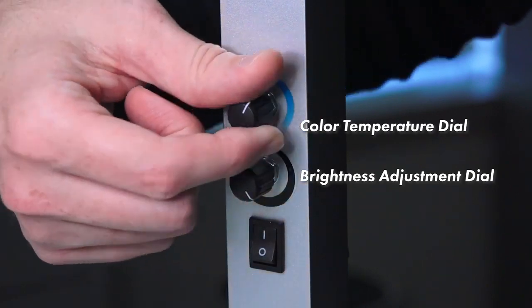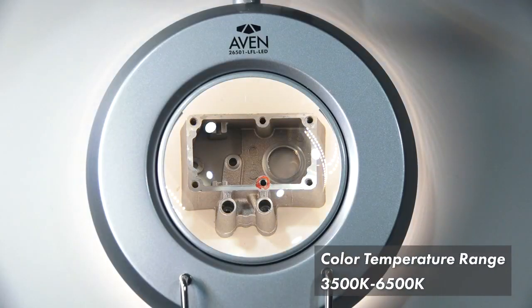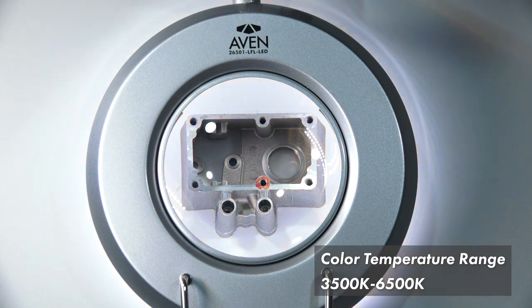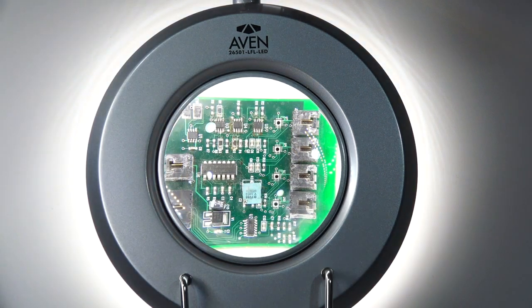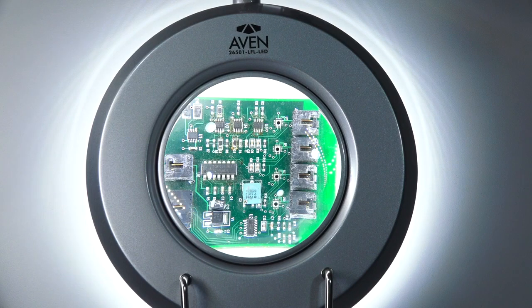So you can slide between a bright white light and an amber light and it changes the color of light from 3500 Kelvin to 6500 Kelvin which might allow you to see things that you might not be able to see with just bright white alone.